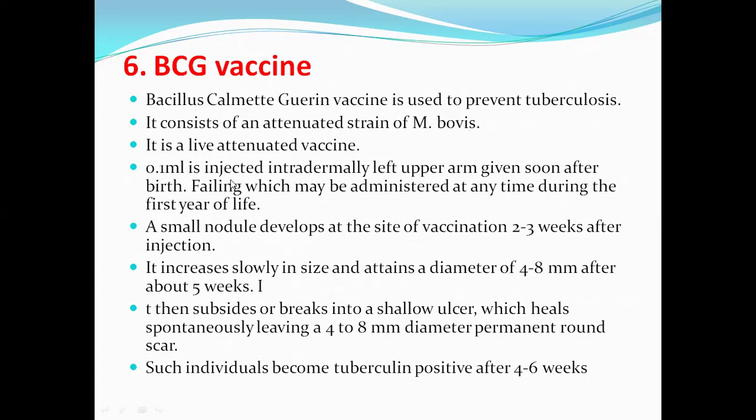This vaccine is given as 0.1 ml intradermally in the left upper arm, immediately after birth. If not given immediately after birth, it can be given within the first year of life. After vaccination, a small nodule develops at the vaccination site, which increases slowly in size and attains a diameter of 4 to 8 mm after around 5 weeks. The nodule ruptures or breaks into a shallow ulcer and heals spontaneously, leaving a permanent scar. BCG vaccinated people also become tuberculin positive after 4 to 6 weeks of vaccination.